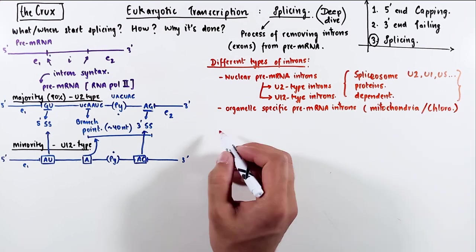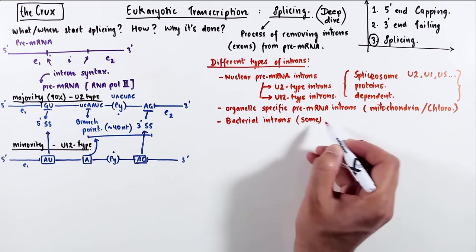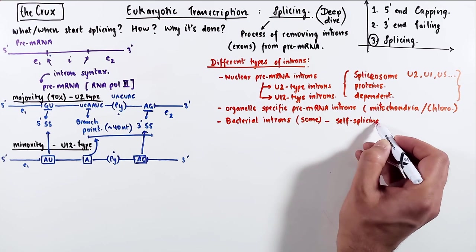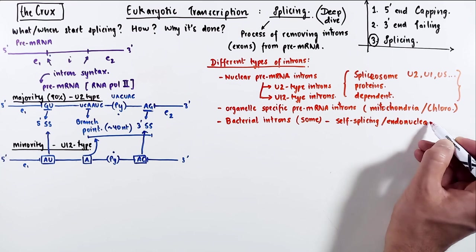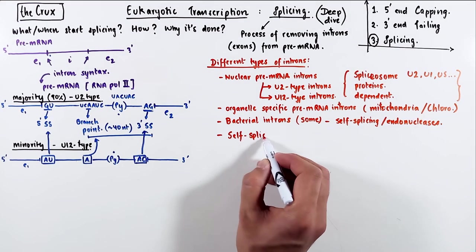Some bacteria, specifically archaeobacteria, have a bunch of introns as well. Their introns are either self-splicing in nature, or they need some help from endonucleases.